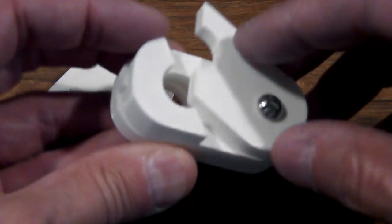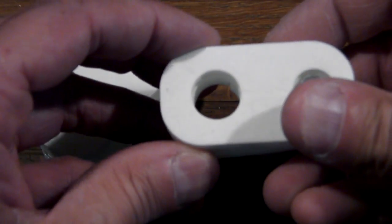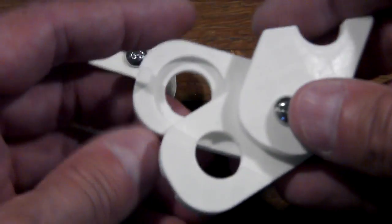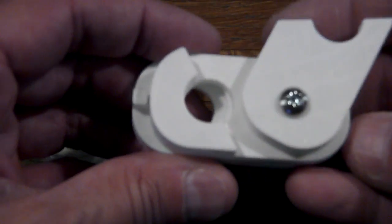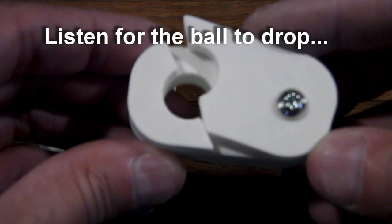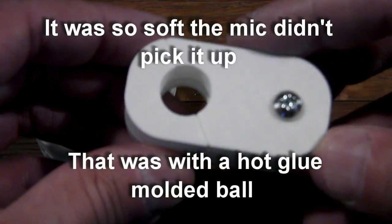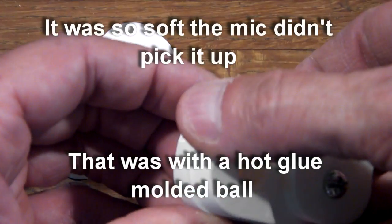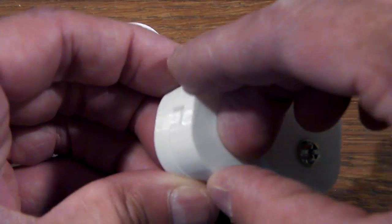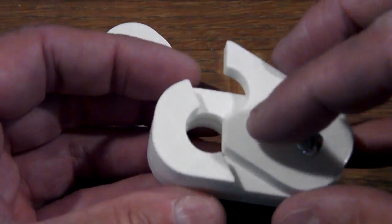What that does is it prevents the bead from making a noise when the lid is shut. The bead does not make a noise if it's made out of hot glue, and that helps prevent the giveaway of the bead dropping.